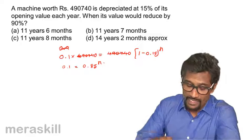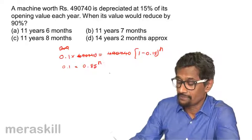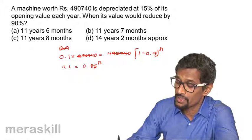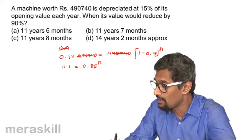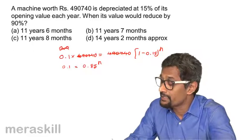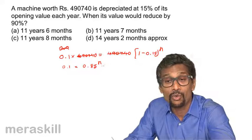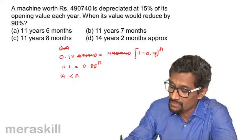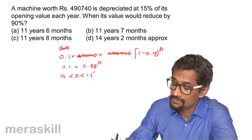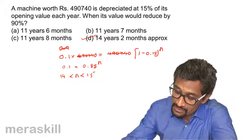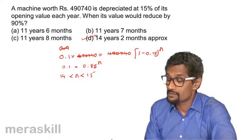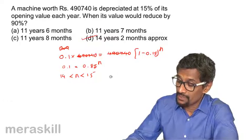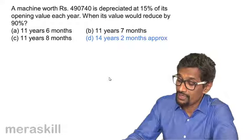Computing powers of 0.85: 0.85 raised to 14 is approximately 0.10 and 0.85 raised to 15 is approximately 0.08. Since 0.1 lies between these values, n is between 14 and 15. The answer is approximately 14 years and 2 months.